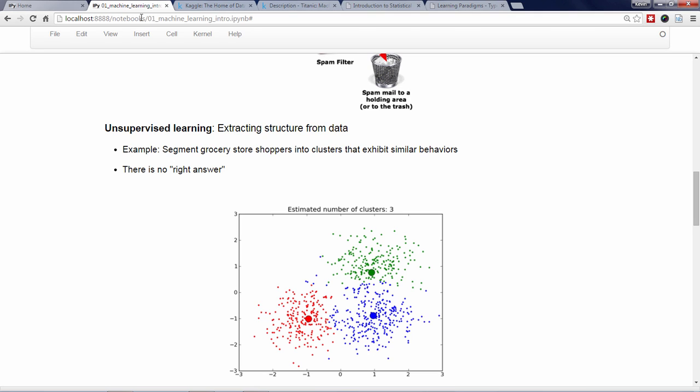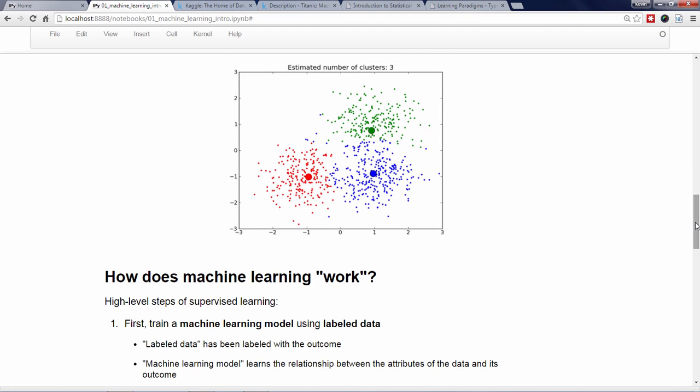So, how does it actually work? At a very high level, here are the two main steps of supervised learning. First, you train a machine learning model using your existing labeled data. Labeled data is data which has been labeled with the outcome, which in the case of the email example is whether each message is ham or spam.